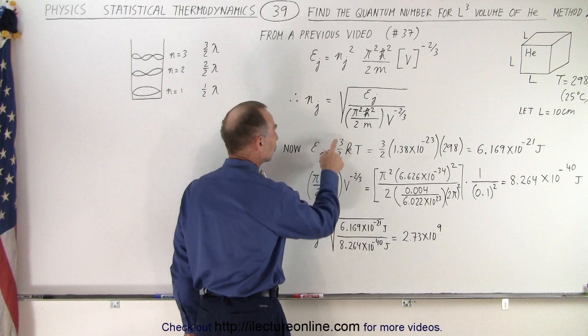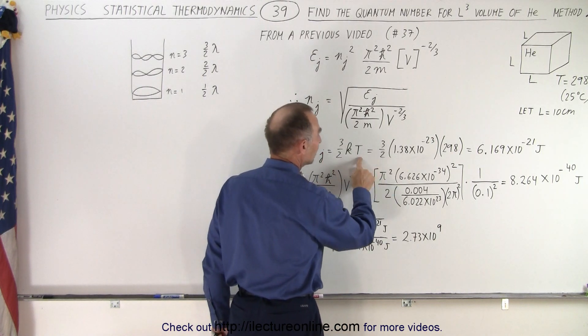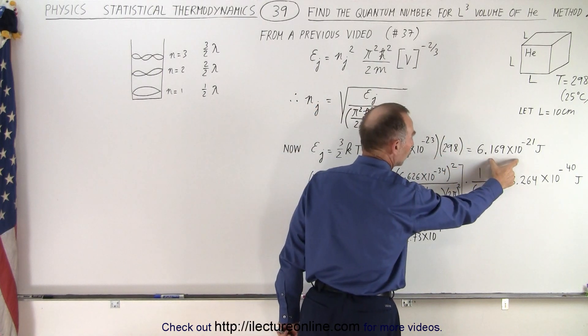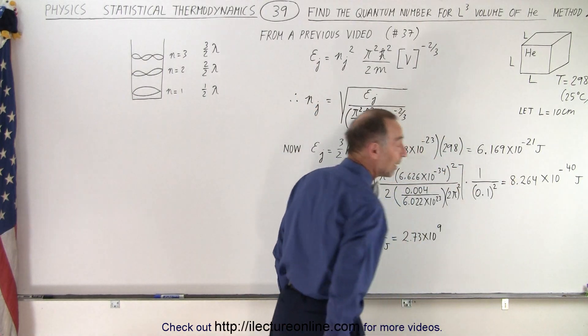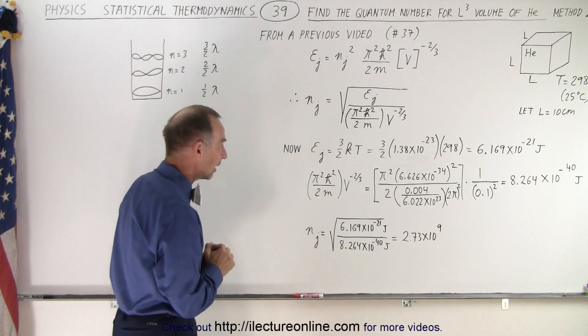First, the quantum energy is 3/2 kT. K, of course, is Boltzmann's constant. T is the temperature in Kelvin. When we calculate that, we get 6.169 times 10 to the minus 21 joules, which is the quantum energy for a helium particle in that box.